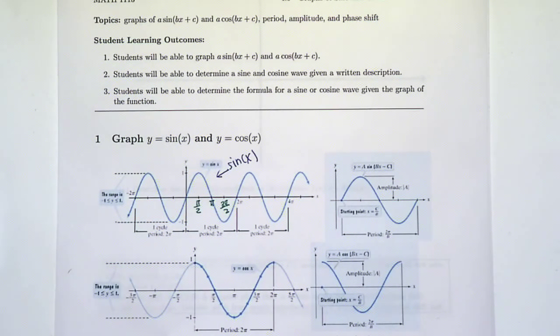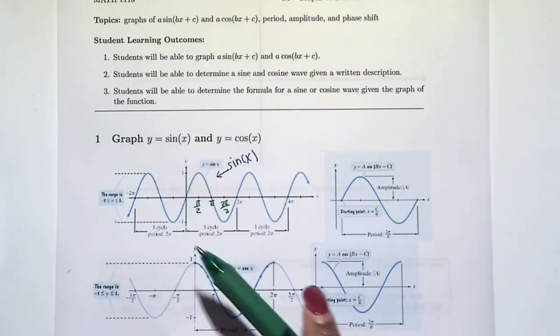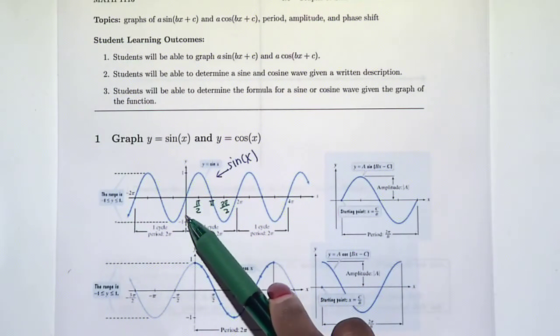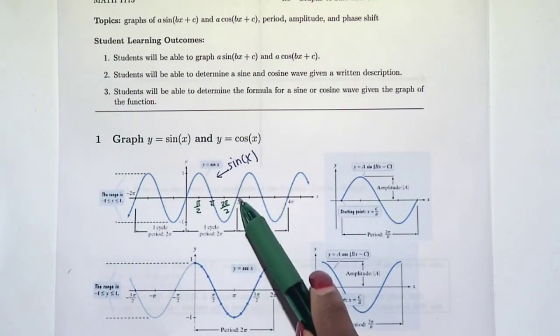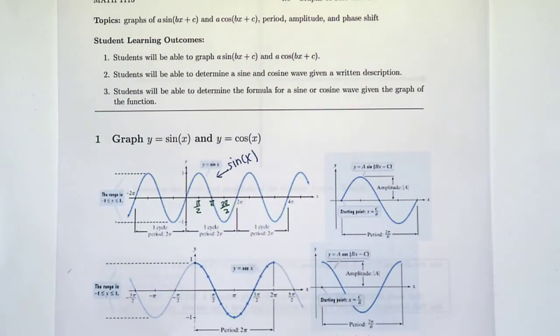There are some other terms that we're going to talk about, like a period, which is one cycle. We know sine has period 2π, so that's how long it takes for it to repeat.